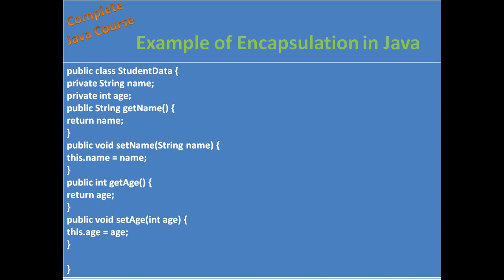Suppose if I want to assign some value to a property defined as private, I can only assign values to it within the same class. If I want to initialize or assign a value from another class — apart from this class — I cannot do it, because the property is defined as private. So we cannot access the value directly.